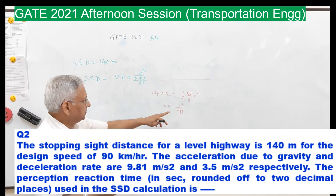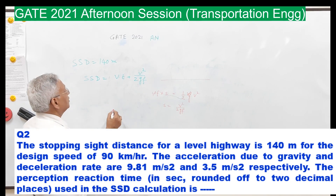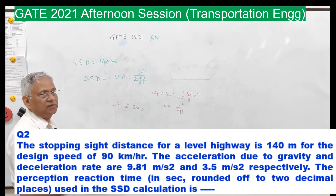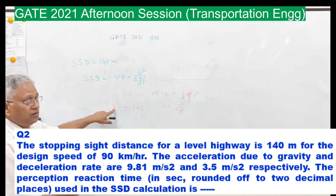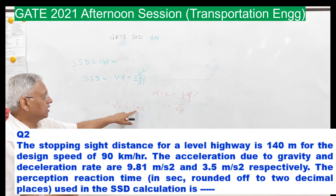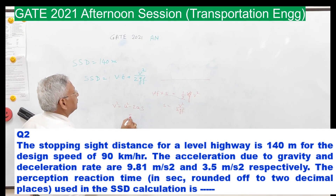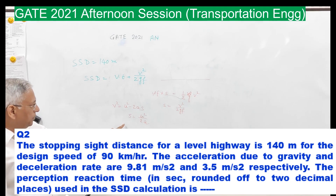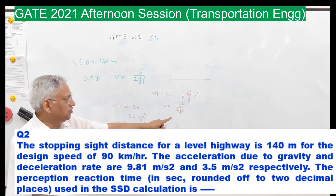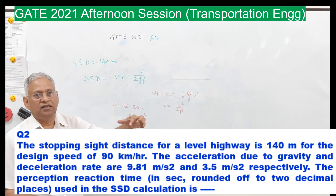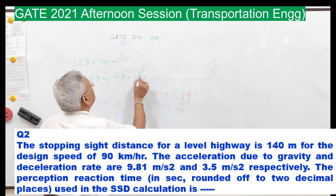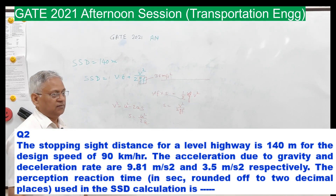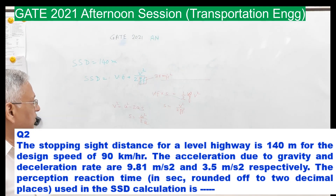Looking at the equation of motion: V squared minus 2AS. If final velocity is 0, the distance S equals U squared upon 2A. Comparing the two equations, A equals G times F, that is your rate of deceleration. This is given as 3.5 meter per second square in the question, so G times F equals the rate of deceleration.